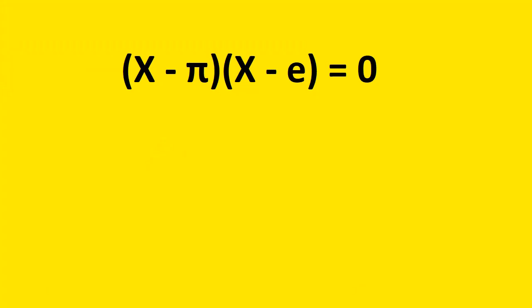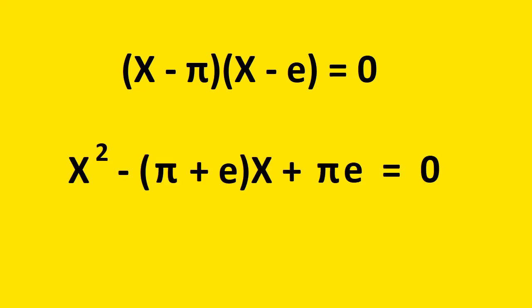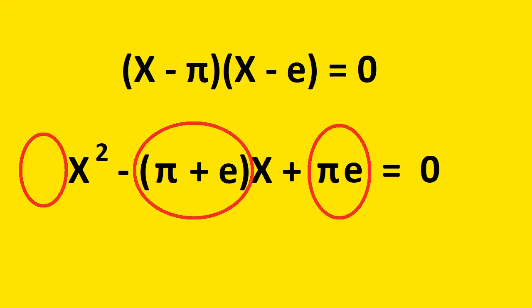Now, we can easily create a quadratic with e and pi as roots. Here's one right here. But that means that at least one of these three coefficients cannot be rational.